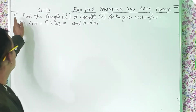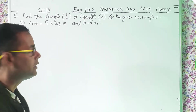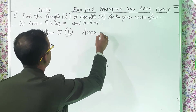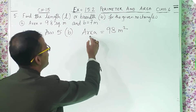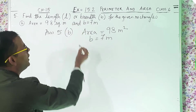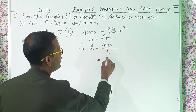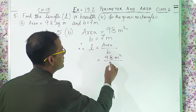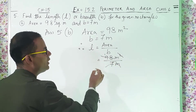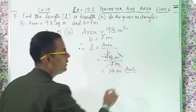Now we will move on to question number 5B. Area equals 98 square meters and B equals 7 meters. Area is given, breadth is given, so you have to find out the length. Therefore L equals area divided by breadth — 98 meter square divided by 7 meter. Meter square cuts, 7 ones are 7, 7 fours are 28, so you get 14 meters and this is the answer.